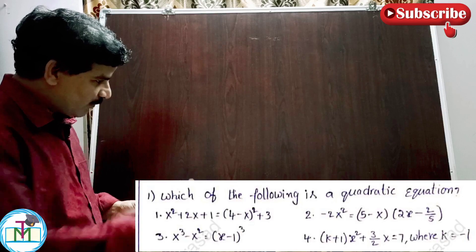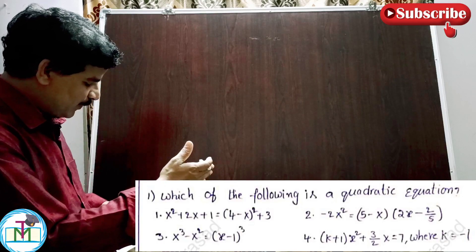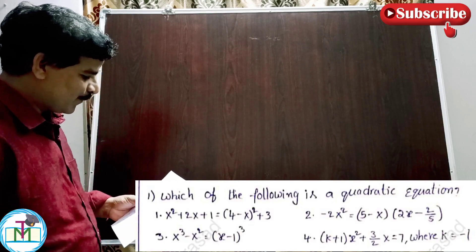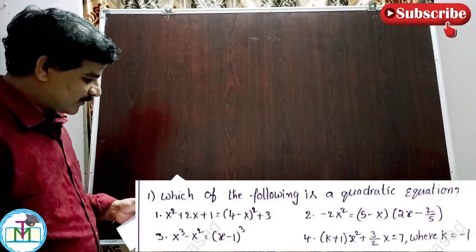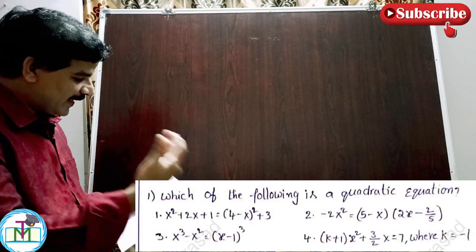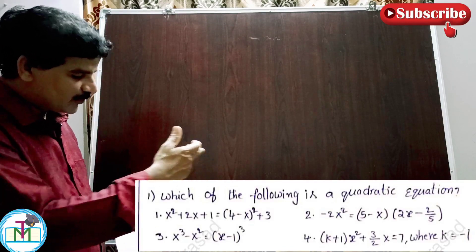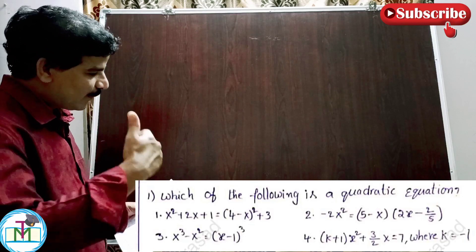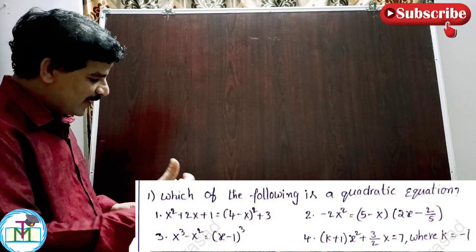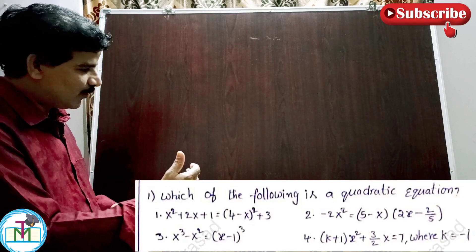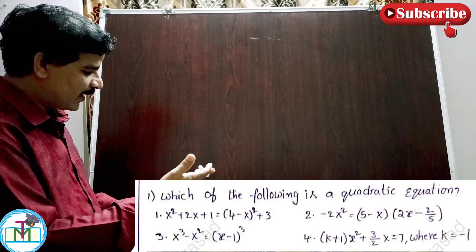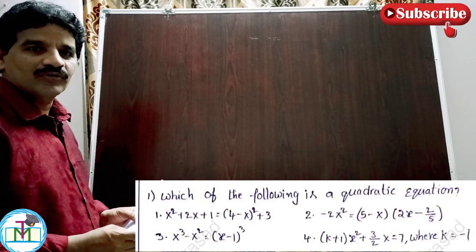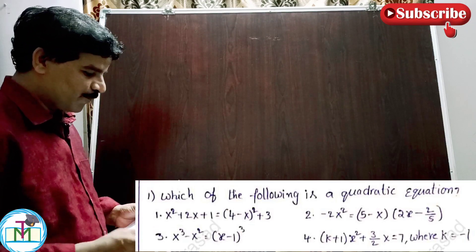Option 1: x² + 2x + 1 = 4 - (x-1)² + 3. On the left hand side we have x². On the right hand side, expanding (4-x)² using the a minus b whole square formula gives a² + b² - 2ab. Both sides have x² terms, so they cancel out. Therefore option 1 is wrong — it is not a quadratic equation.